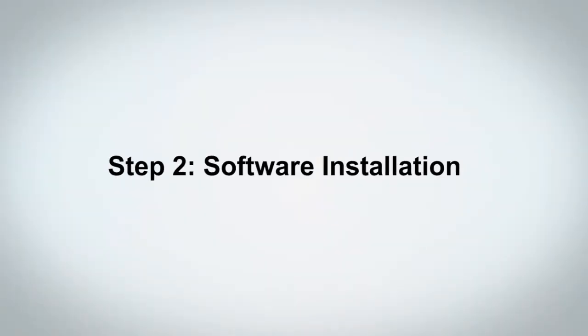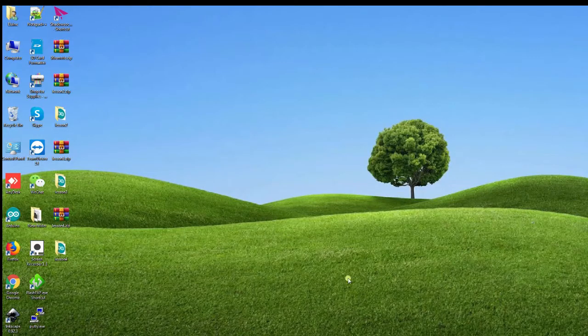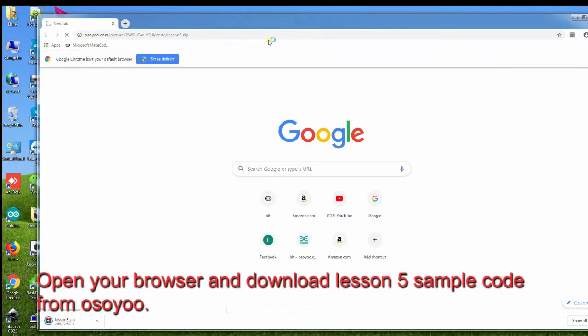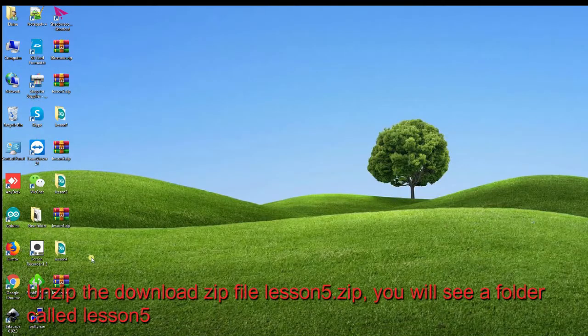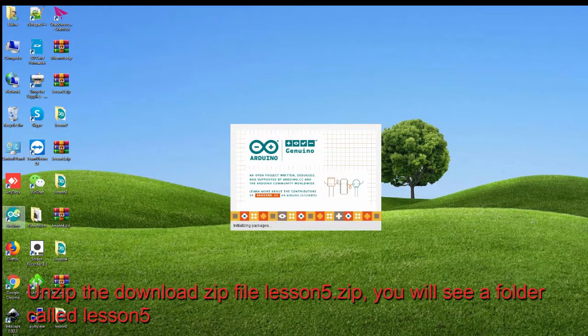Step 2: Software Installation. Open your browser and download Lesson 5 sample code from OSIO. Unzip the downloaded zip file Lesson5.zip, and you will see a folder called Lesson5.